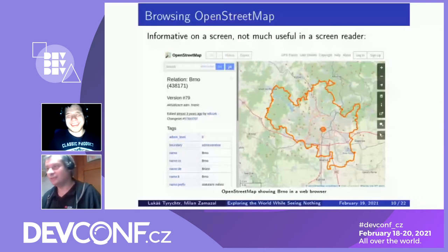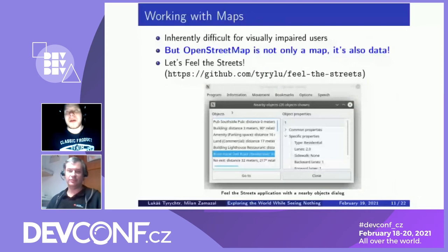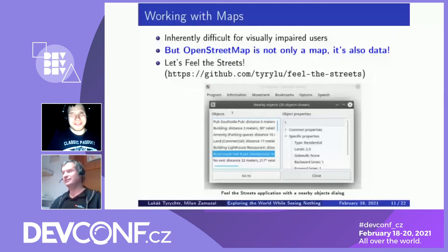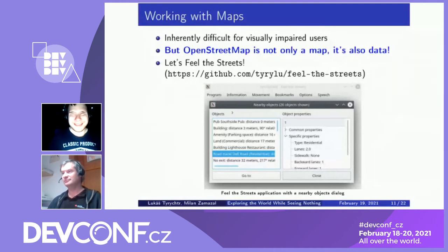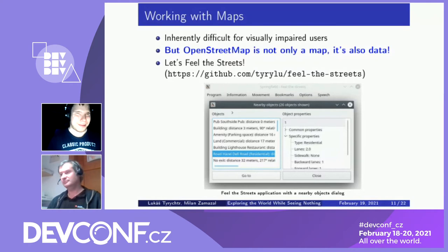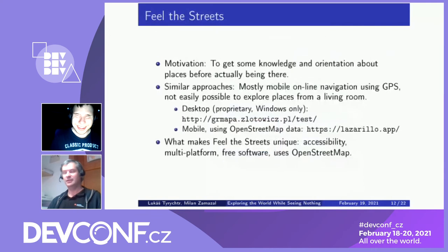It doesn't look very useful indeed, but OpenStreetMap is not only pictures, unlike proprietary maps — it's also data. Can we use that? Fortunately, we actually can. Well, everything started one day when I was just walking a street and wondering what else is here. I know a few things, but there's probably more. So I created an application called Field of Streets, which basically allows the visually impaired to walk around the streets and see what's around, do some searches, and so on. And I would say it's quite useful.